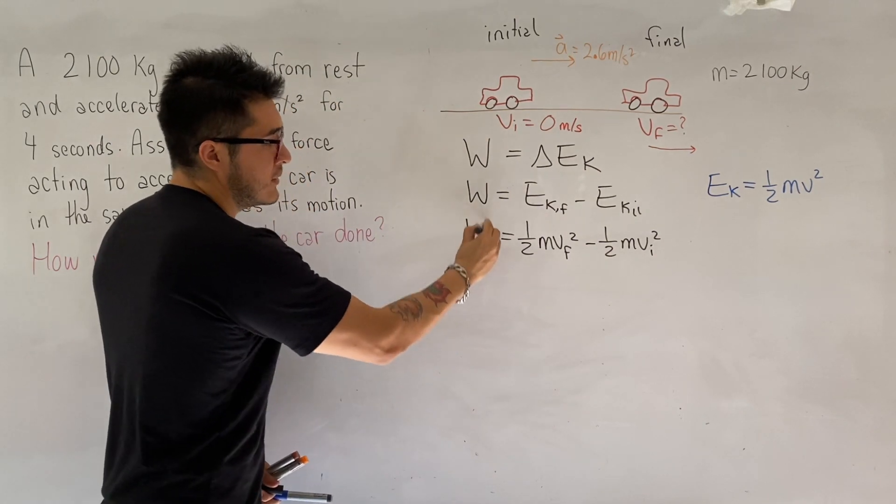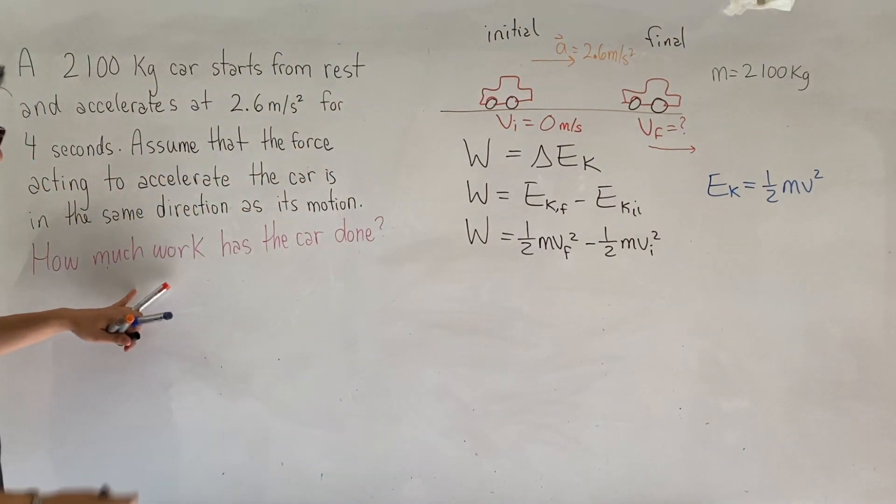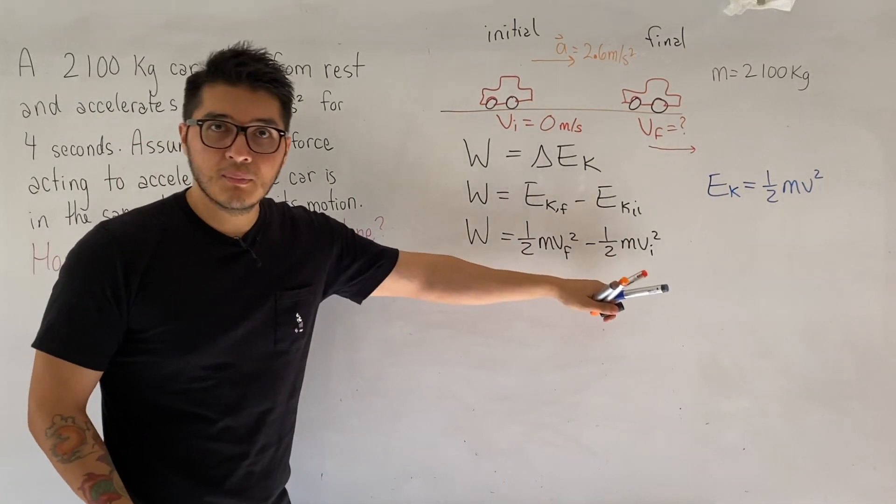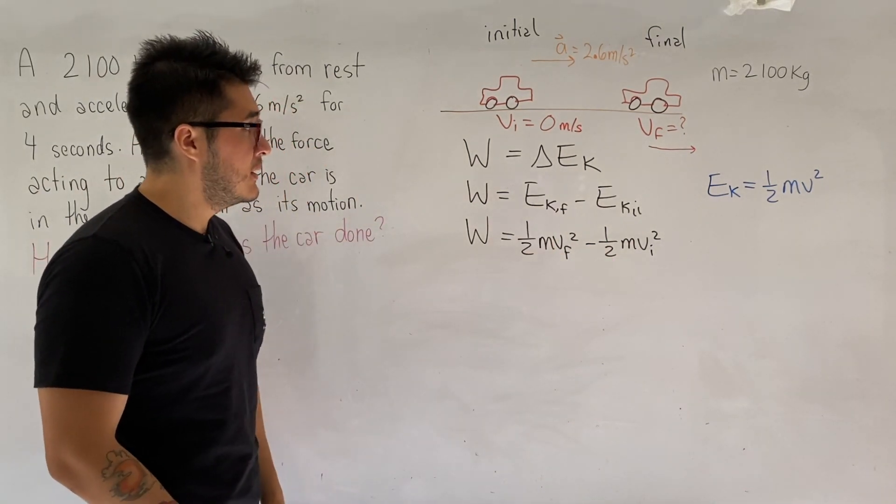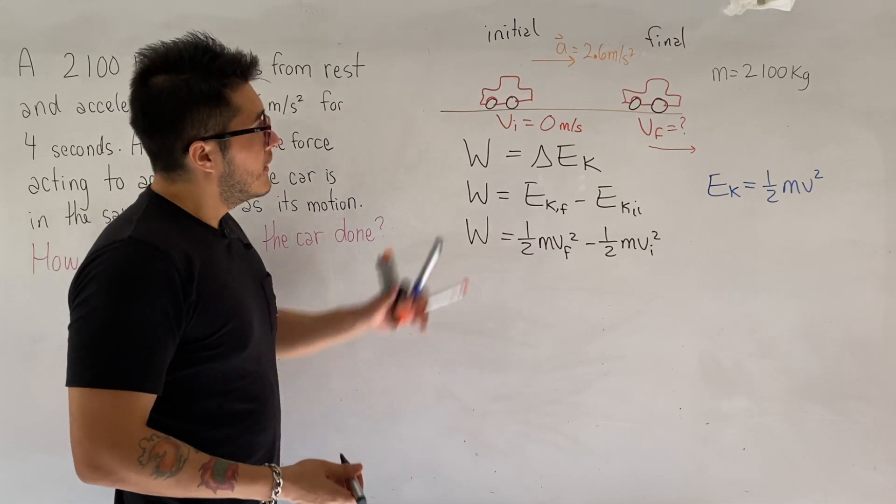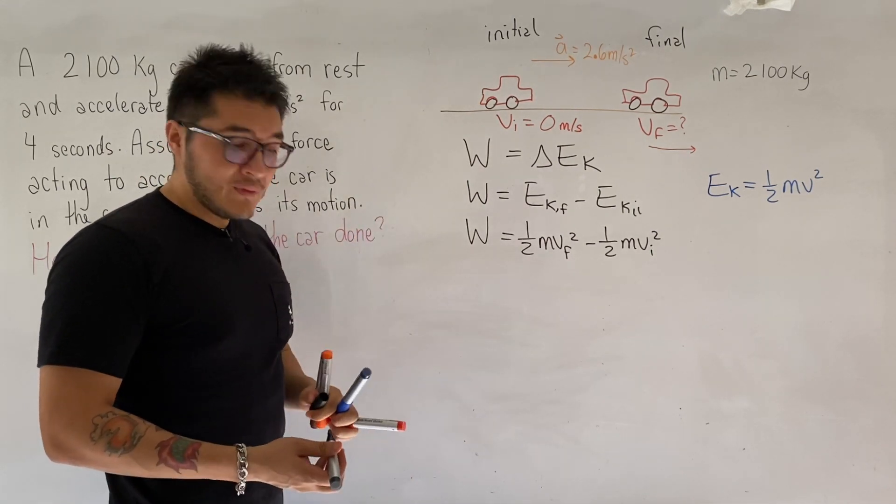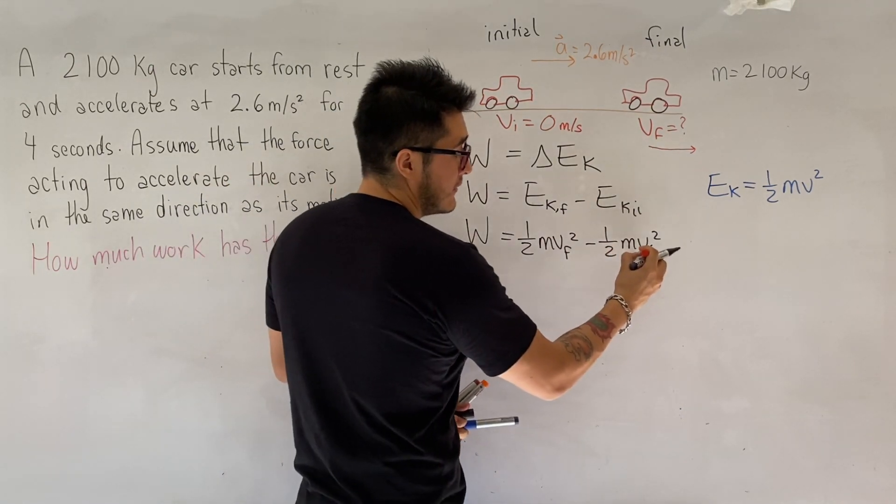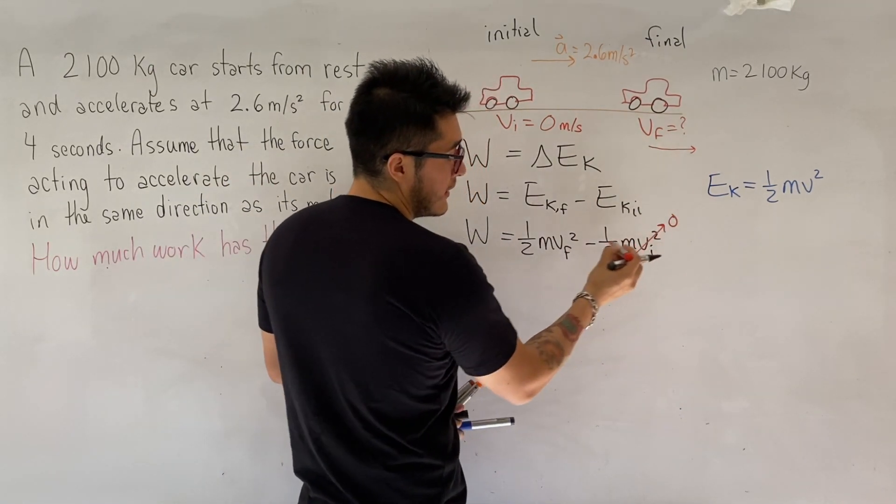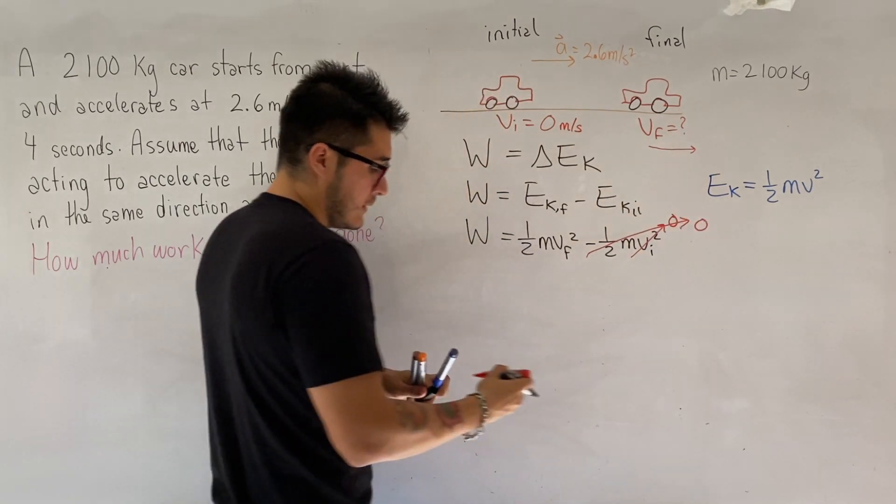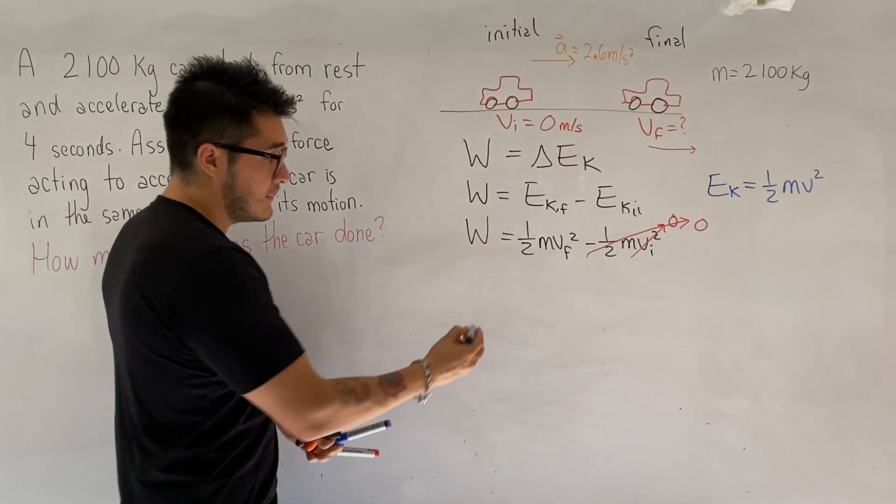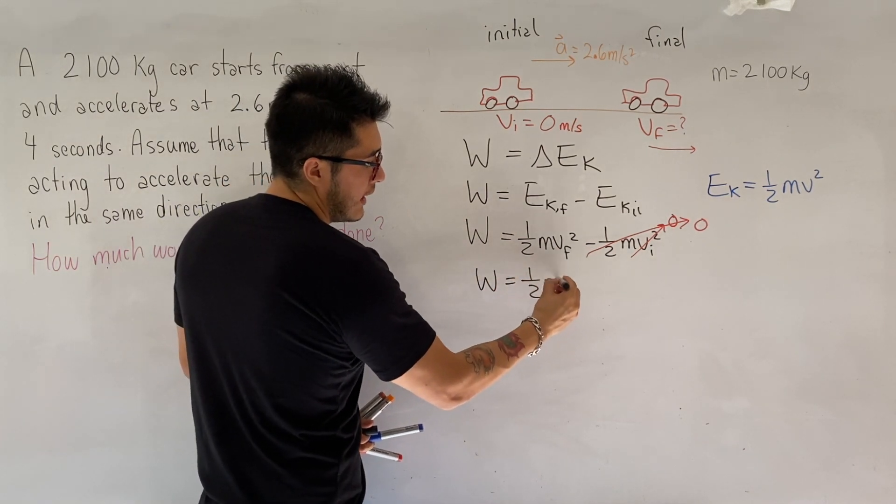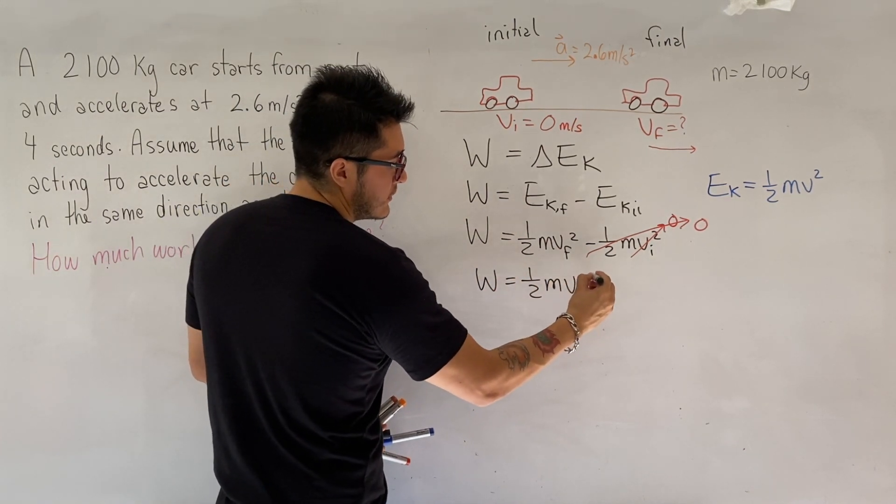So for the final conditions, we can replace this as ½mvf² minus ½mvi². And that will give us the work done, which is what the question was asking us, right? How much work has the car done? Well, that depends on how much kinetic energy has changed. In this case, we have the initial velocity to be 0. So that's going to simplify our calculations by a lot because if the initial velocity is 0, this whole term goes to 0. So the work done is just equal to ½mvf².